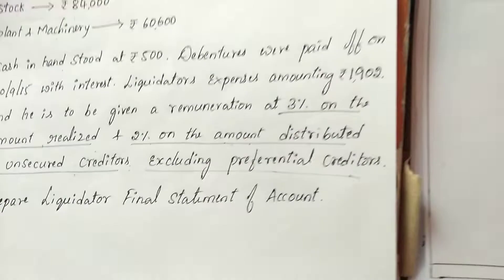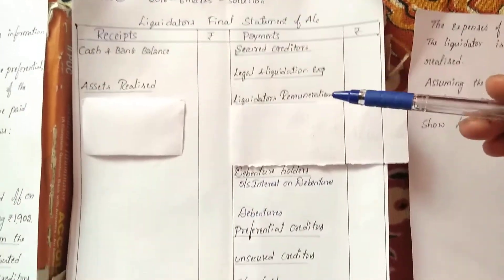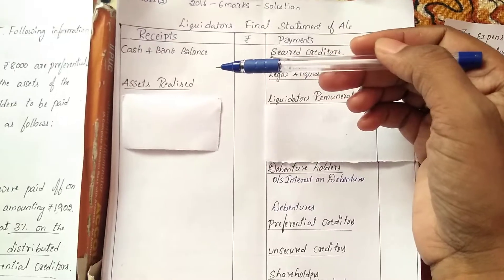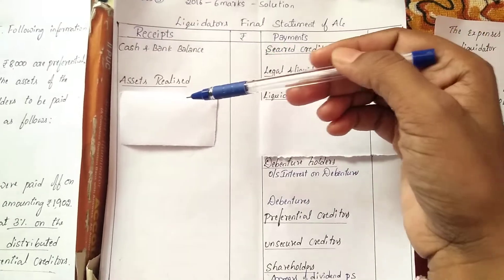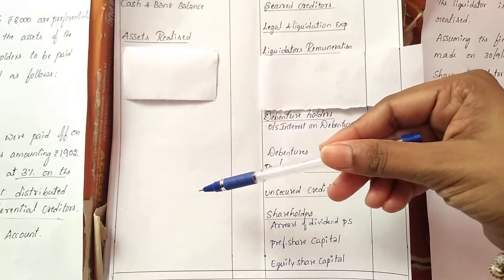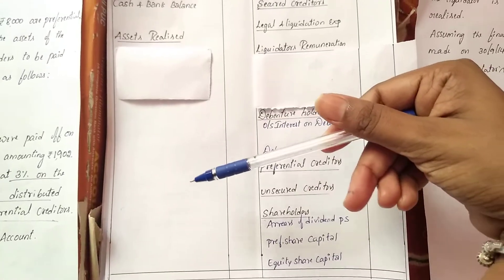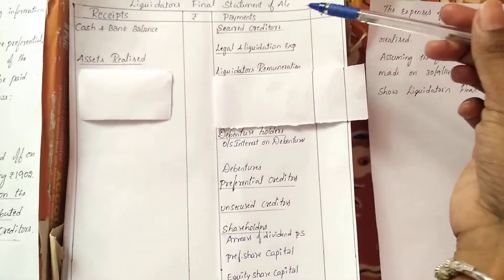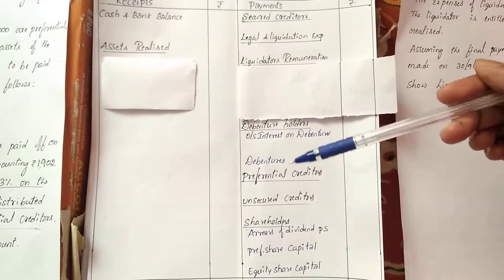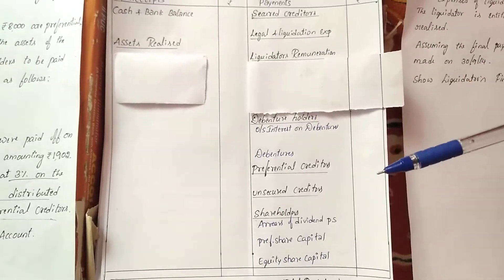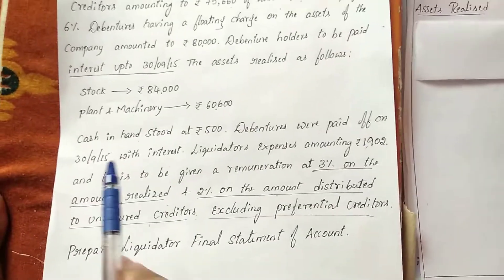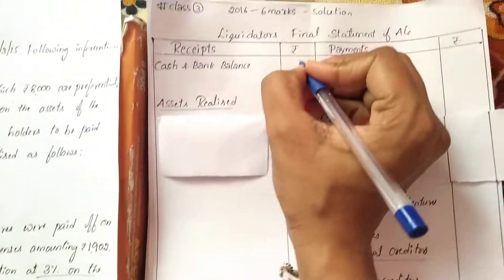First, you need to note the format. Record the format first. The receipt side includes: cash and bank balance, assets realized, surplus from secured creditors, calls money received from contributors. Now, cash and bank balance given in the question is rupees 500.